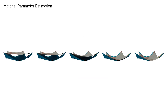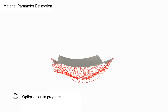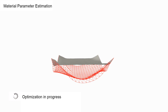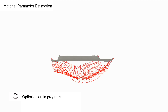Similarly, we demonstrate optimization of the Young's modulus of the fabric to match the provided shape at a specific time step in the simulation. Here we show the optimization in progress with different iteration results visualized. Note how the method converges to the right shape.